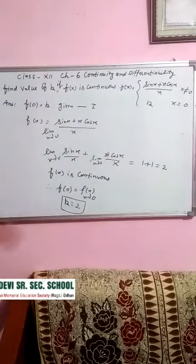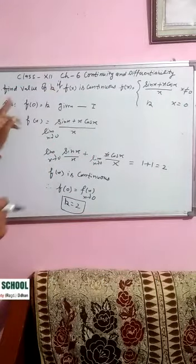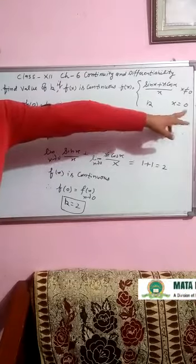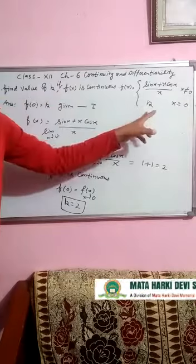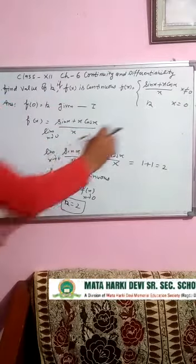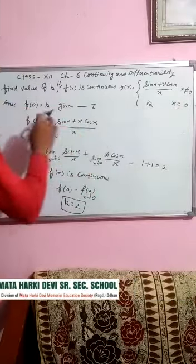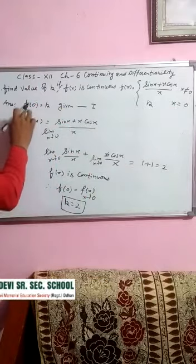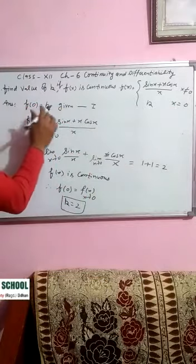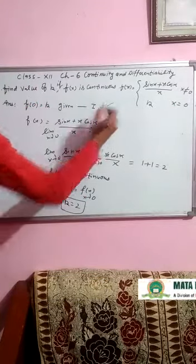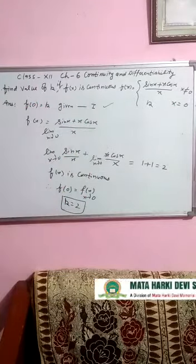To continuous ke liye, hum pehle solve karenge. f(0) kitna hai? f(0) is equal to k — so f(0) is equal to k, given. Isko equation 1 maan lete hain.